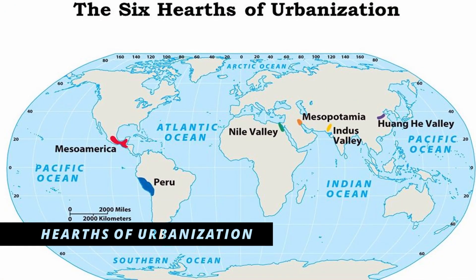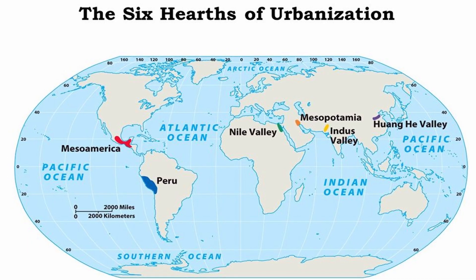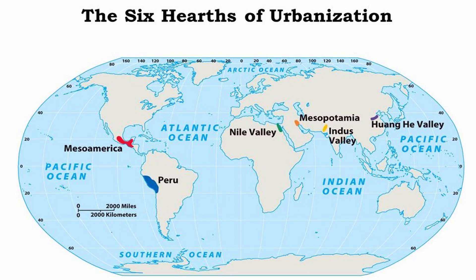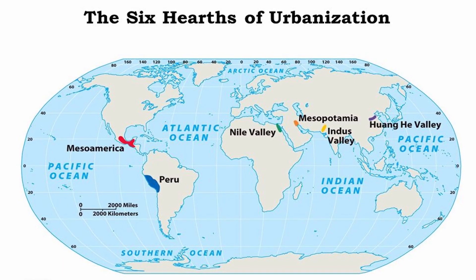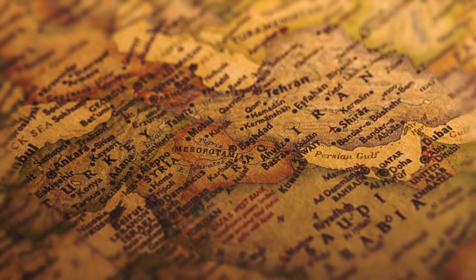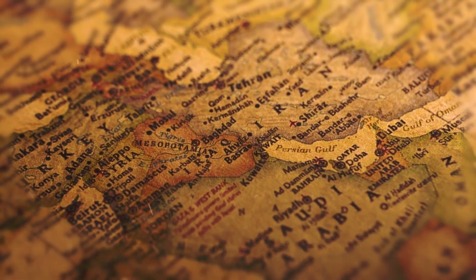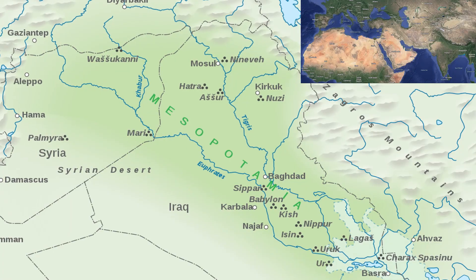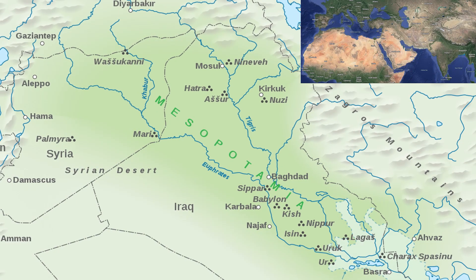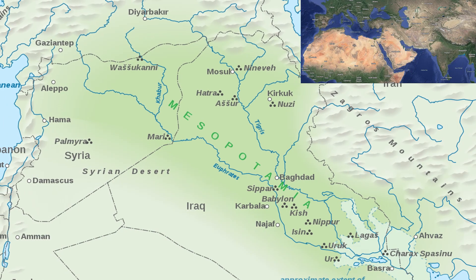Let's move on to the hearths of urbanization. There are six that you need to know: Mesoamerica, Peru, the Nile Valley, Mesopotamia, the Indus River Valley, and the Huang He River Valley, also known as the Yellow River Valley. All six are equally important, but the one I've seen most on the AP exam is Mesopotamia, also known as the Fertile Crescent — located between the Tigris and Euphrates Rivers, and considered one of the first agricultural and urban hearths of the world.